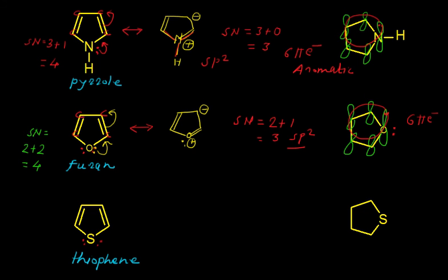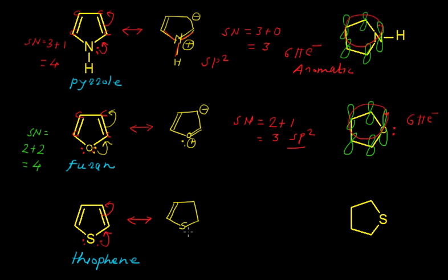Now let us look at thiophene. In this case, if you calculate the steric number of sulfur, it is again 4. So this lone pair of electrons will get delocalized, giving us a resonance structure. The resonance structure of thiophene has sulfur with the existing double bond remaining as it is, one new double bond added, a lone pair on sulfur with a positive charge, and a negative charge on this carbon atom.